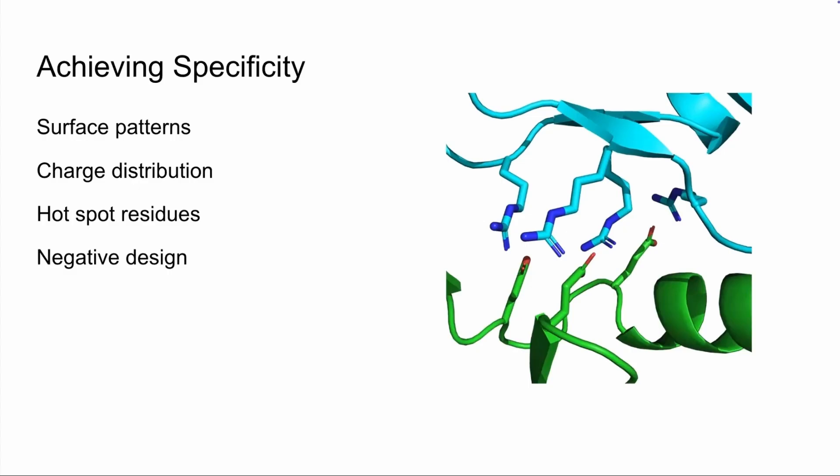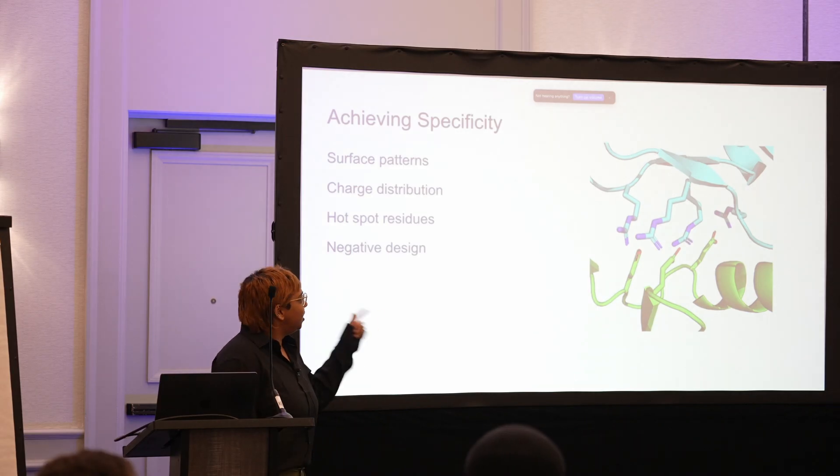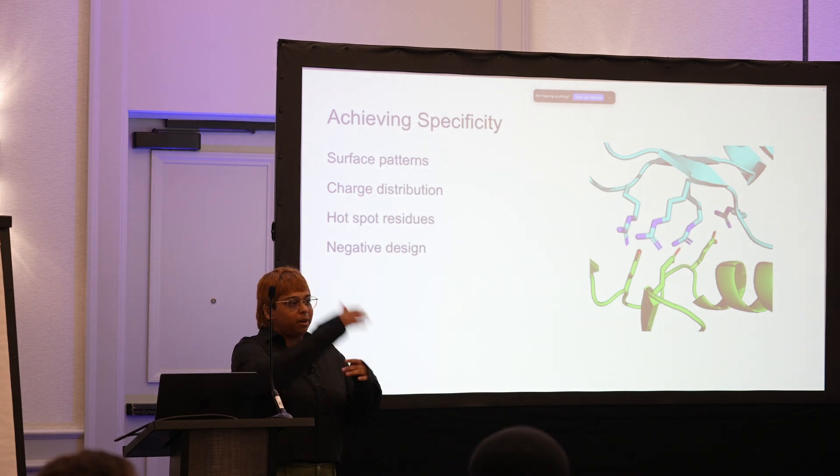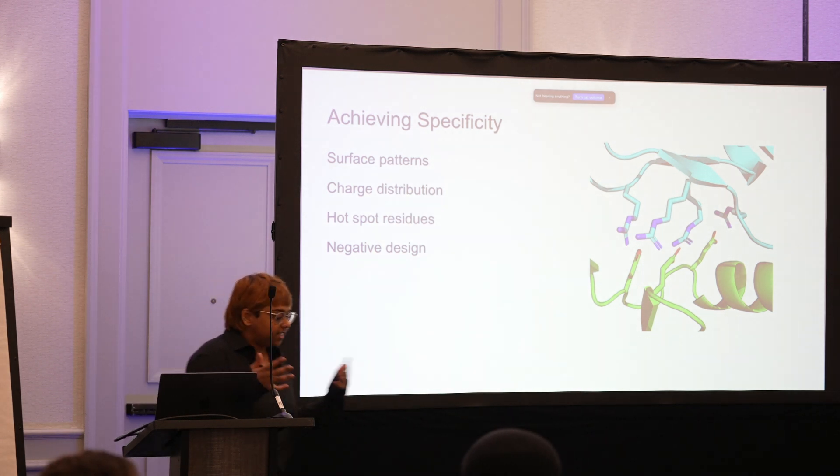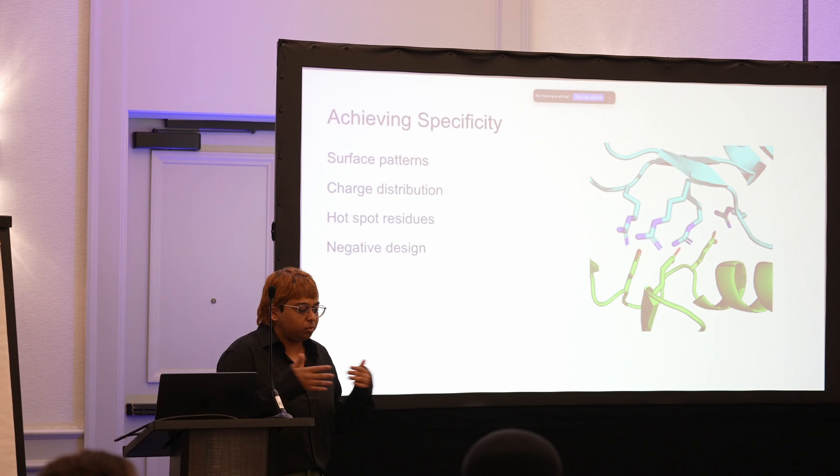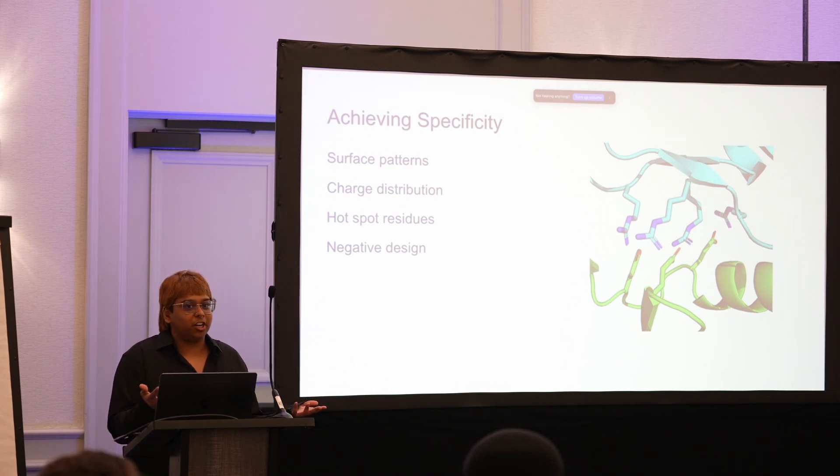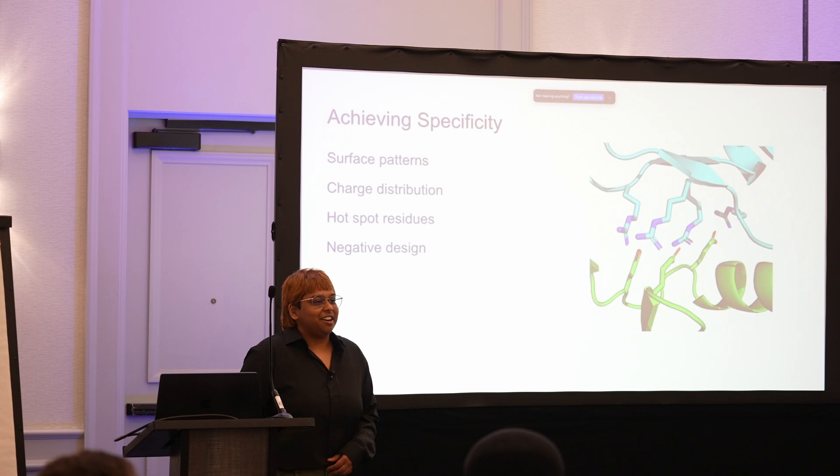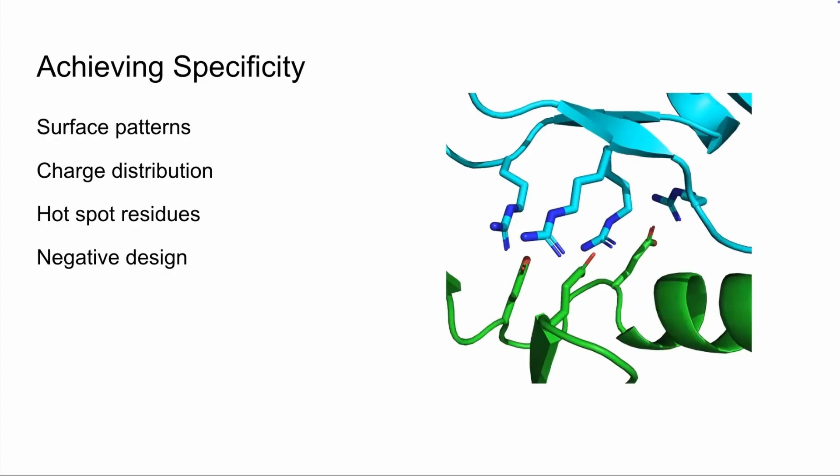So I'm showing here a protein that Matt, the TA, designed as sort of like an exaggeration. And so this interface is all positive on one side, all negative on one side. And he's designing these heterodimers, so he doesn't want the homodimer to form. And it actually ended up working. So obviously this is an extreme example, but you want to be thinking about which charges to place where, especially if you're trying to achieve specificity in that way.